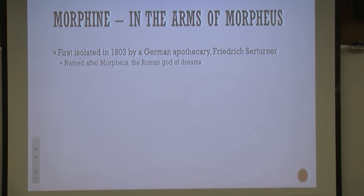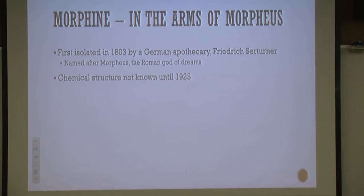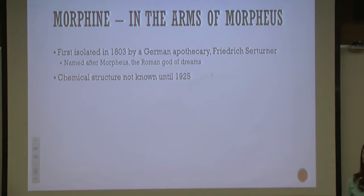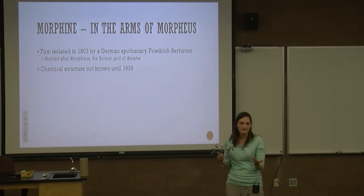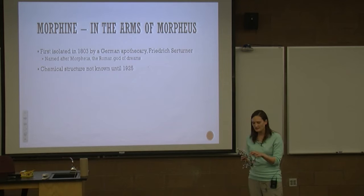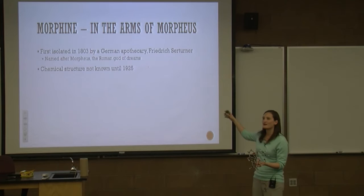Morphine specifically was first isolated in 1803 by a German scientist, Friedrich Sertürner. He named it after Morpheus, the god of dreams, because morphine numbs the senses and makes you sleepy. It took 122 years before they were actually able to figure out the structure. The process of discovering the structure of morphine was as important to chemistry as morphine has been to medicine — it really helped chemists develop new laboratory techniques, new ways of doing synthesis, and to understand the 3D nature of carbon atoms.